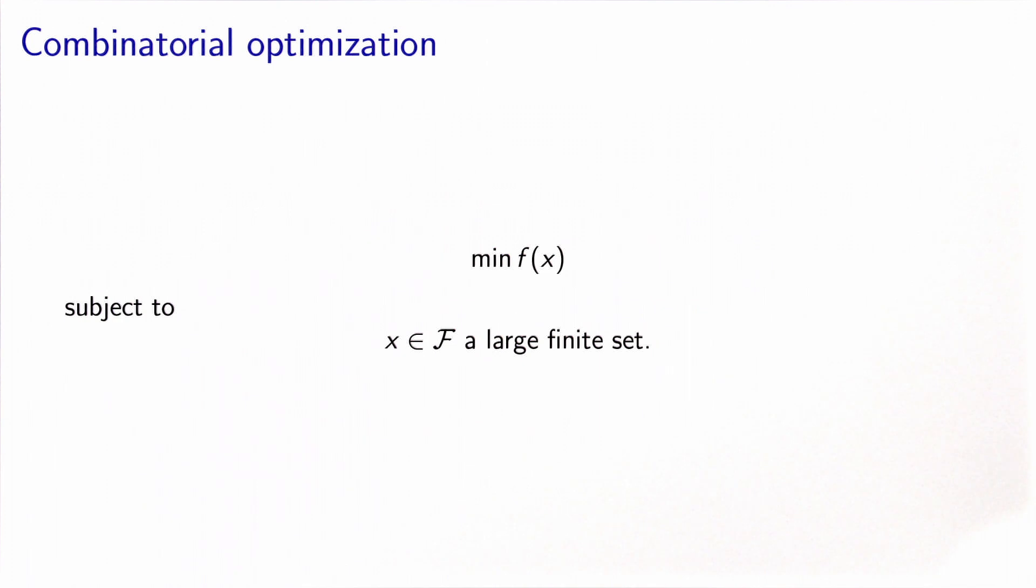Discrete optimization happens to be actually a combinatorial optimization problem. The name combinatorial optimization refers to a case where we minimize an objective function over a large finite set.